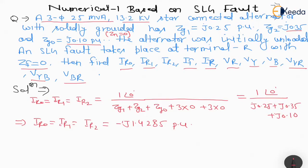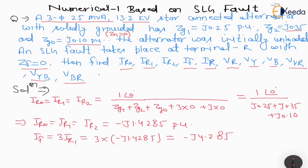So this is the value of IR0, IR1, and IR2. Now if we want to find out the fault current IF, then IF = 3 × IR1 = 3 × (-J1.4285) = -J4.285 per unit. This is how we calculated the fault current.